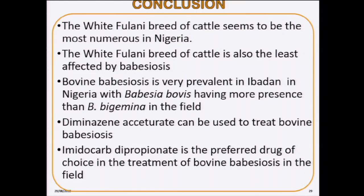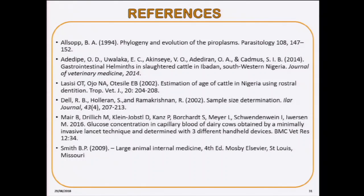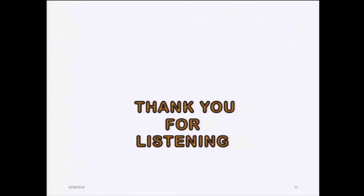Conclusion: The White Fulani breed of cattle seems to be the most numerous in Nigeria. Bovine babesiosis is very prevalent in Ibadan, Nigeria, and Babesia bovis is the more prevalent species. We can use diminazene aceturate to treat, but not as effectively as imidocarb dipropionate, because imidocarb causes greater recovery across all measured parameters. Further studies can build on this approach. I thank you so much for listening.